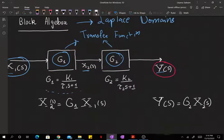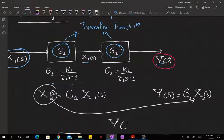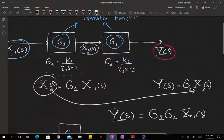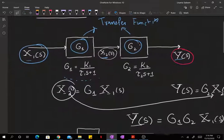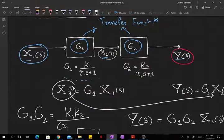Now, from just a matter of simple substitution, you can see that y can be written as g1 times g2 times x1 of s. I've just substituted the expression for my intermediate variable, and through that, I'm able to find the transfer function that relates y and x1. So g1 times g2, that transfer function is just going to be k1 times k2 over tau 1 s plus 1 times tau 2 s plus 1.